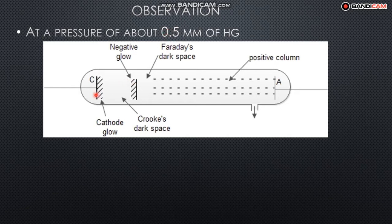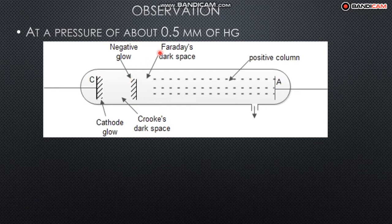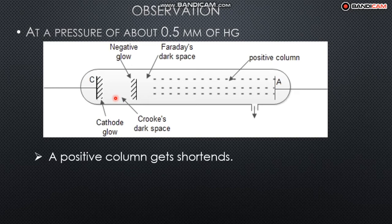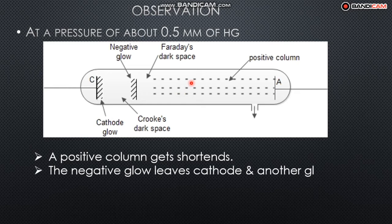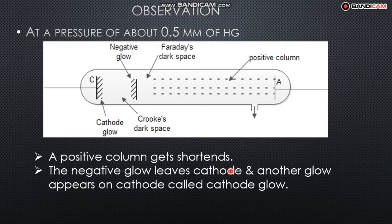At further reduced pressure, near the cathode we observe what is called the Crookes dark space. The Crookes dark space appears between the cathode and the negative glow. The negative glow, positive column, and Crookes dark space are now distinct features. The positive column becomes shorter as the Crookes dark space grows and takes up more of the tube.